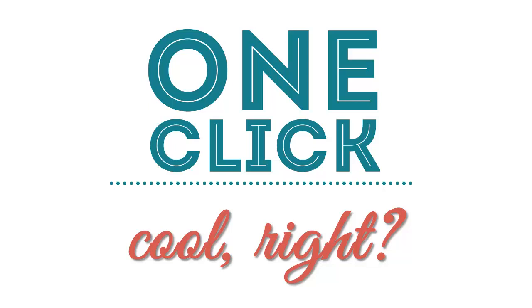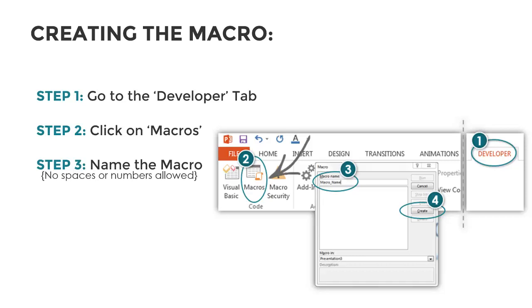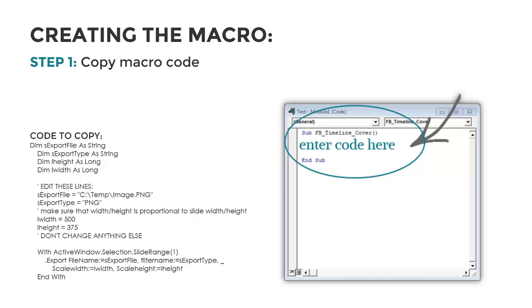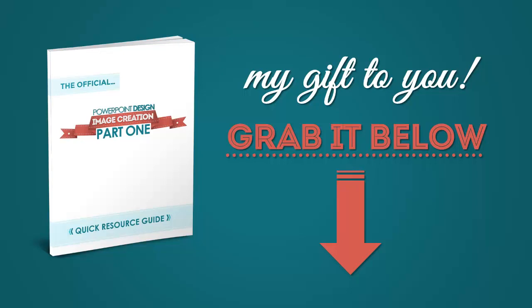Let me walk you through how incredibly easy it is to create this macro. Go up to the Developer tab in PowerPoint, click on the Macros button, name your new macro — and here's a tip: you're not allowed to use any spaces or numbers, so put an underscore anywhere you want a space. Then just click Create. Now we need to grab a chunk of code for our macro, which we'll customize in just a minute. All you have to do is copy and paste and then change a couple lines. You don't need to write the code yourself or memorize it. Don't worry — this code and everything I'm covering in this video is outlined for you in the workbook linked below.